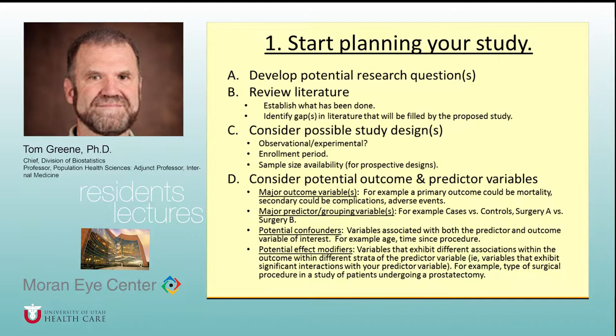You should think through predictor variables and grouping variables. For observational research — studies without randomization — a critical step is identifying confounders: variables associated with both the predictor exposure variable and the outcome. You need strategies for controlling for these variables. You also need to identify effect modifiers, which are variables where the relationship you're studying may vary across different groups of patients.